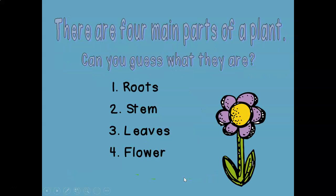Now there are four main parts of a plant. The first one is the roots, stem, leaves, and flower.